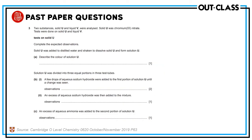Another question: two substances, solid U and liquid V, were analyzed. Solid U was chromium nitrate. Test on solid U: solid U was added to distilled water and shaken. It's a transition metal salt, so a colored solution will be formed. Chromium salts are green in color, so a green solution is seen. Transition metal salts always make colored solutions.